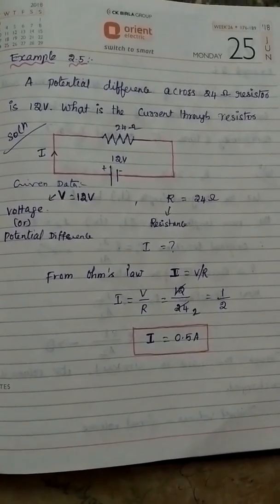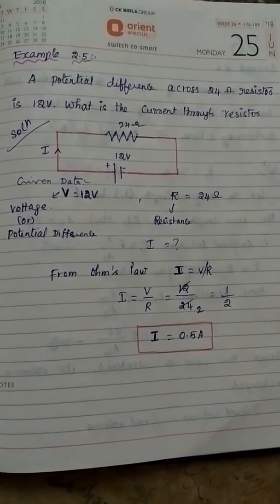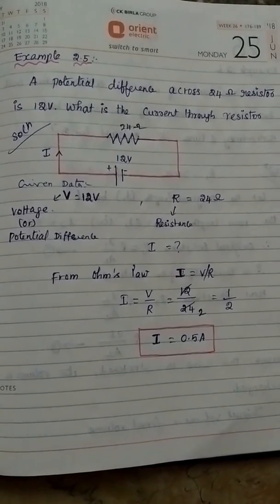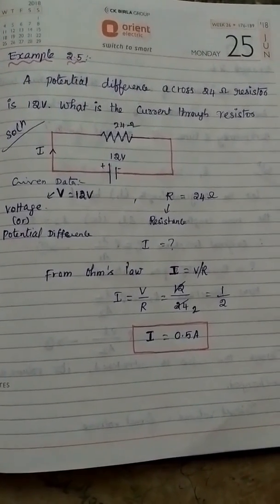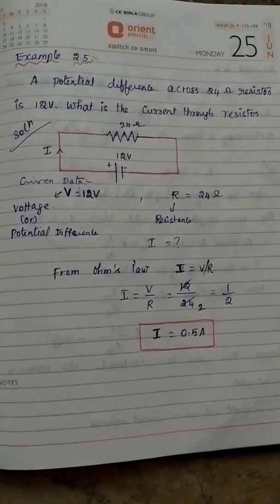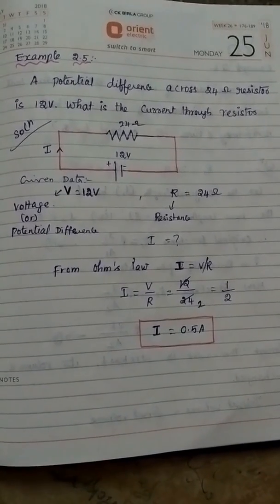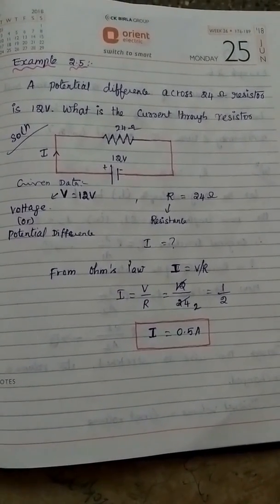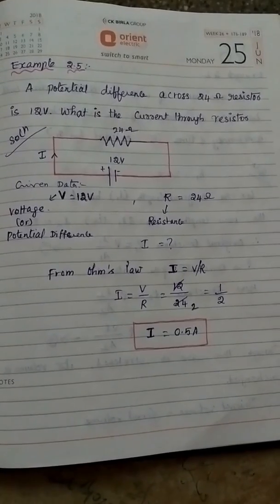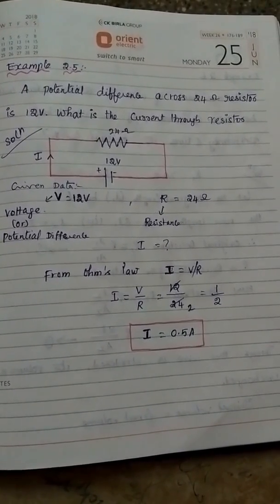Next is Example 2.5. A potential difference across a 24 ohm resistor is 12 volts. What is the current through the resistor? The solution: the given circuit shows one battery connected to the resistor in a parallel connection.